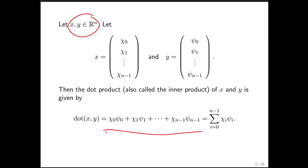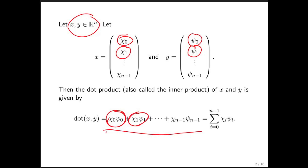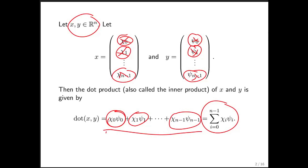What do we have here? We multiply the first components together, then we multiply the second components together and add those to the first, and then we keep doing that until we get to the last components — we multiply those together and add those in as well. We can write this more concisely as the sum from i equals 0 to n minus 1 of χᵢ times ψᵢ.